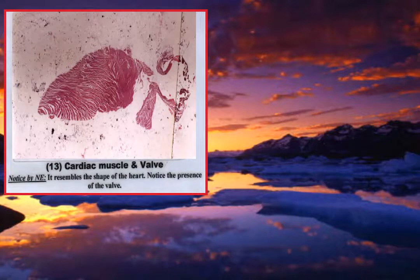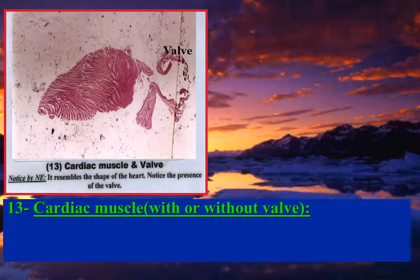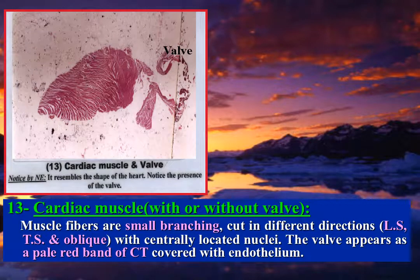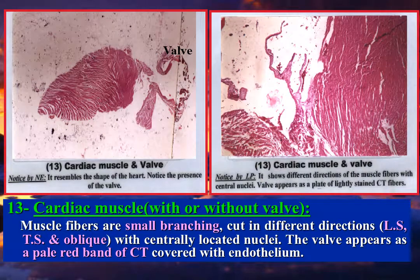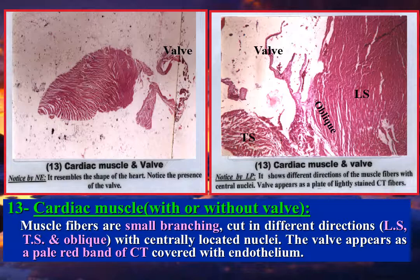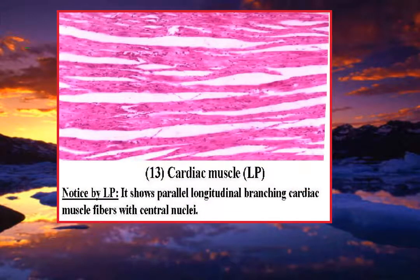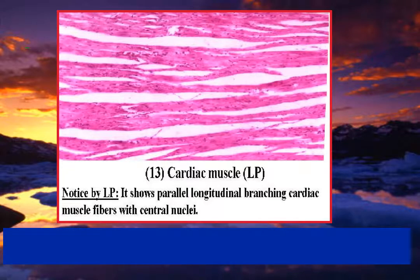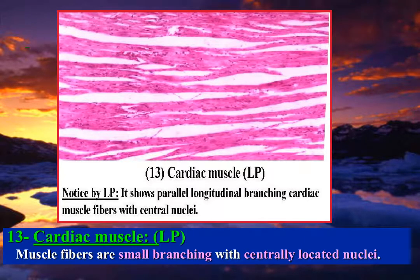Cardiac muscle fibers are small, branching, cut in different directions: LS, TS, and oblique, with centrally located nuclei. The valve appears as a pale red band of connective tissue covered with flattened cells called endothelium. LS of cardiac muscle fibers by low power shows parallel, small, longitudinal branching fibers with central nuclei.